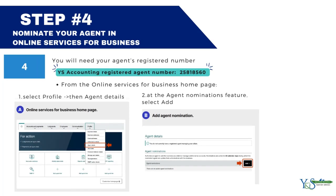Step four — nominate your authorized agent in Online Services for Business. To complete this step, you will need your agent's registered agent number. The YNS Accounting registered agent number is 2581-8560. Please write down this number as you will need it in the following steps. From the Online Services for Business homepage, select your profile, then select Agent Details, then use the Add Agent Nomination feature and select Add.